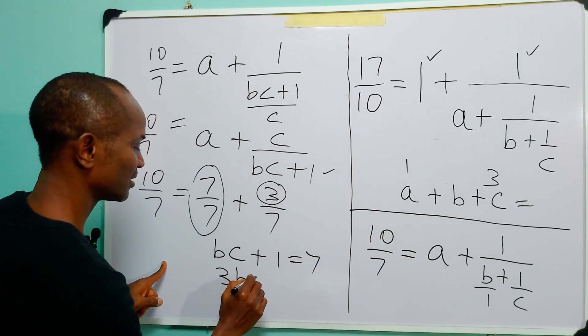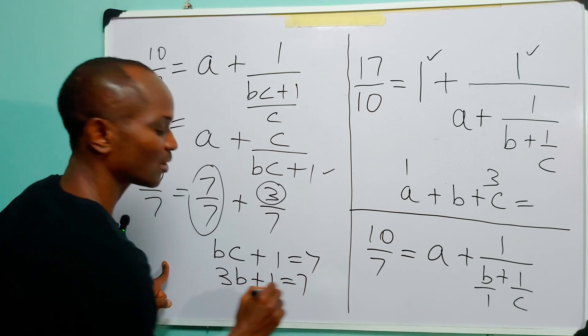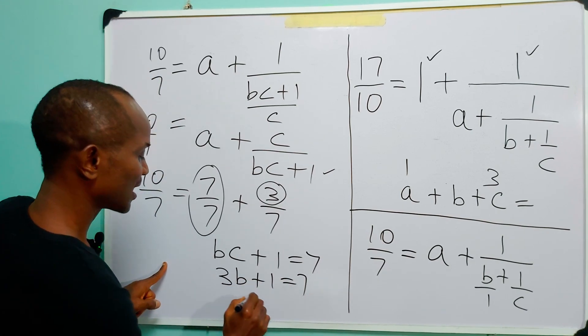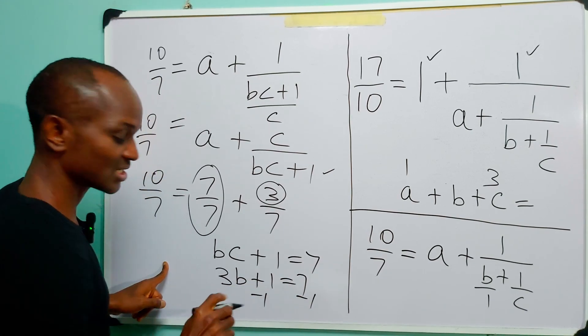So we have that 3B plus 1 is equal to 7. So, subtracting 1 from both sides of this equation...